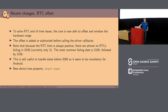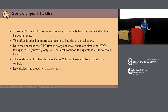Almost no RTCs will fail in 2038, at the end of the 32-bit Unix epoch, because it's actually 31 bits. The most common failing date will be 2100, followed by 2106, which is when the 32-bit unsigned value overflows.